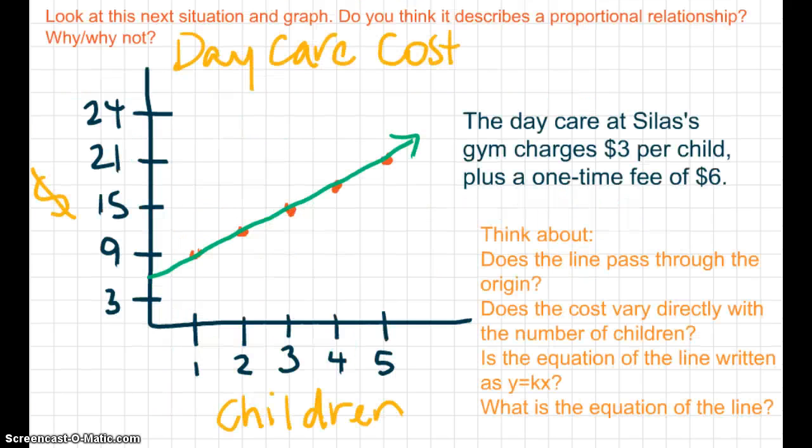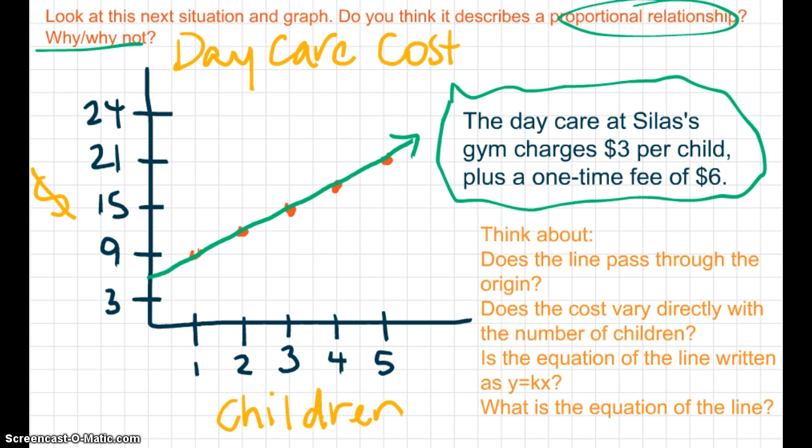So now I want you to look at this next situation and the graph that matches it. And I want you to determine if you think that it describes a proportional relationship and think about why or why not. So here is the situation. The daycare at Silas' gym charges $3 per child plus a one-time fee of $6.